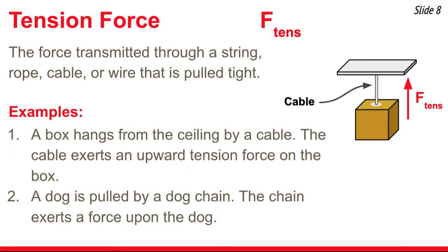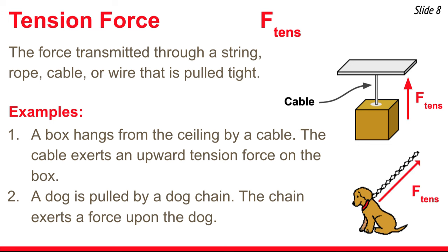Our next contact force is called tension force — a force transmitted through a string, rope, cable, or wire that's pulled tight. We can use the symbol F-tens. For example, a box hangs from the ceiling by a cable — the cable exerts an upward tension force on the box. Or a dog is pulled by a dog chain — the chain exerts a tension force upon the dog. Tension forces are always directed parallel to the chain, cable, wire, or string.